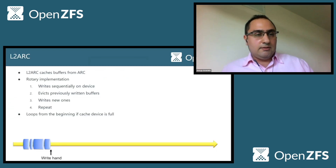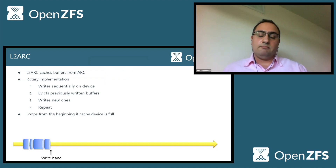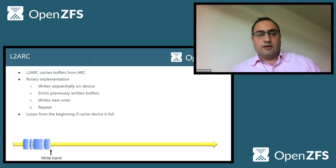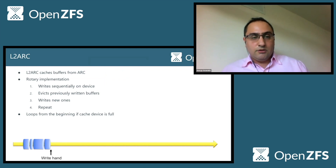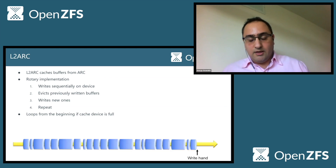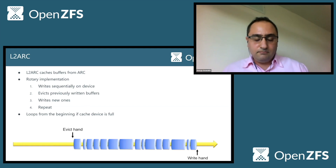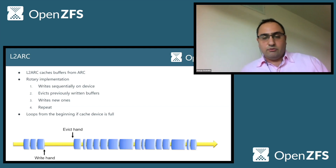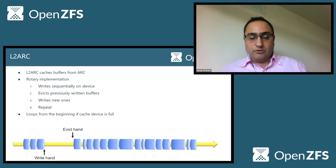So how did we make a persistent L2ARC happen? First of all, the L2ARC is a cache — it's a device that caches buffers. It is worth noting that it is a rotary implementation. What happens — you can see a schematic at the bottom of the screen — is that we write buffers, and when the device is full, it will start evicting previously written buffers in order to make space to write new ones. The important thing to realize here is that it's a rotary implementation: it loops back to the beginning if the device is full.